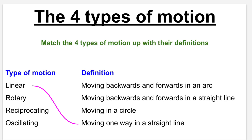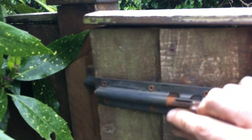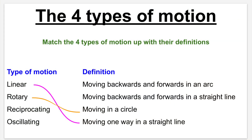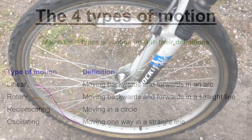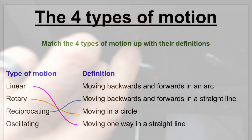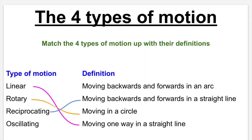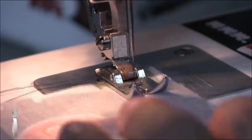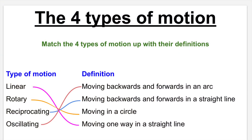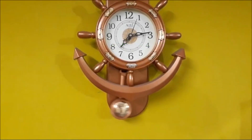Firstly, linear motion is moving one way in a straight line. Next we've got rotary motion, which means moving in a circle — lots of examples of this including the bike wheel, the gears on the tin opener, and the temperature dial on the car. Next we've got reciprocating, which means moving backwards and forwards or up and down in a straight line, just like the needle on a sewing machine. Finally, we've got oscillating, which means moving backwards and forwards in an arc, just like the pendulum on a clock.